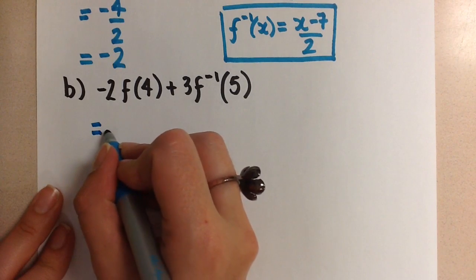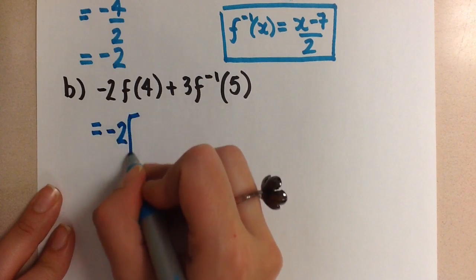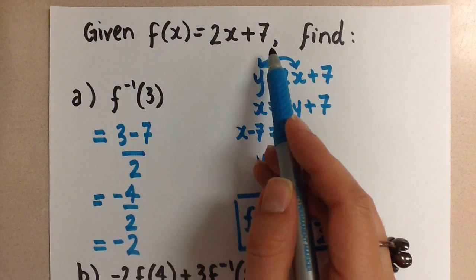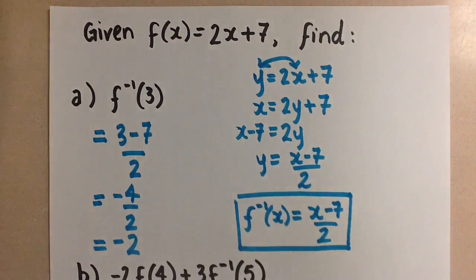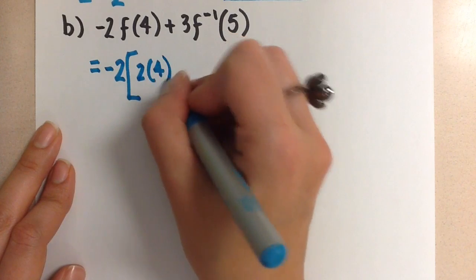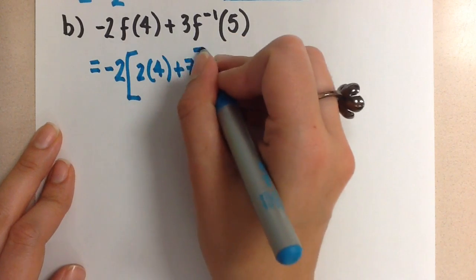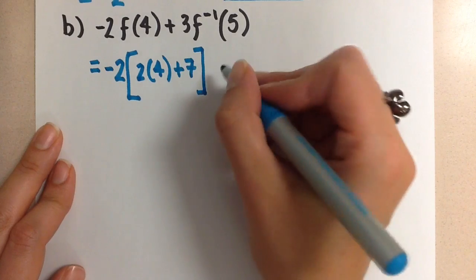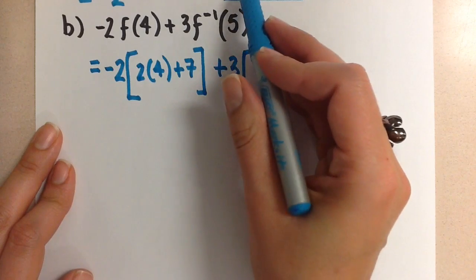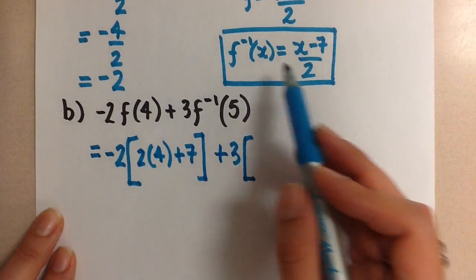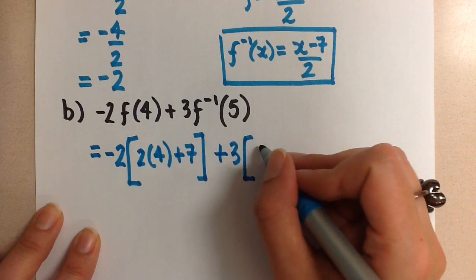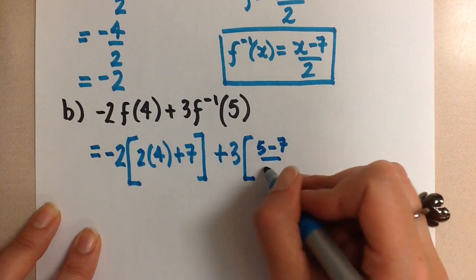So it's going to look like this. Negative 2 times, now we're going to go back to the original equation, the 2x plus 7, and sub in 4 for the x. So that is 2 times 4 plus 7. Now let's look at the second part of the expression. We have plus 3 times. Now we're going to use the inverse relation, right here, the inverse relation. And we're going to sub in 5 for x. So this is 5 minus 7 over 2.